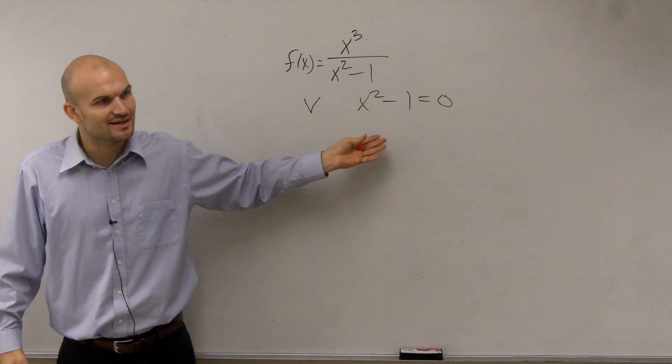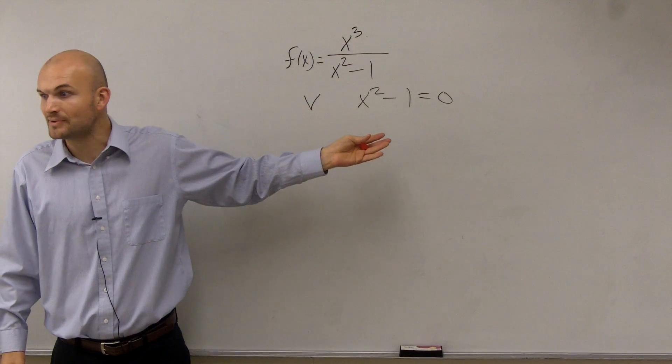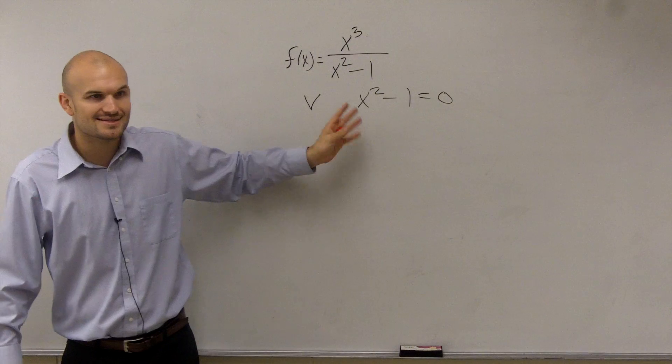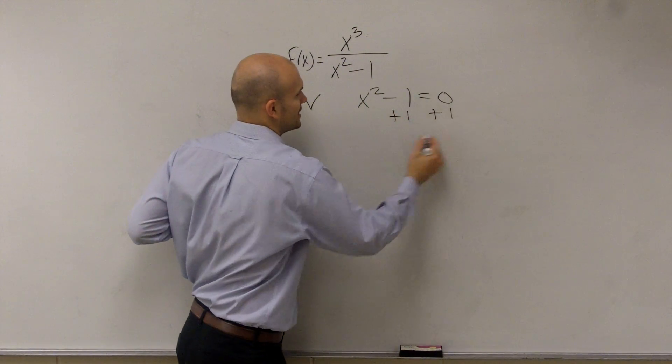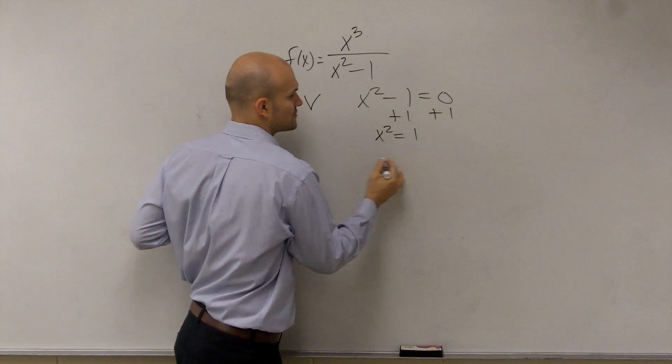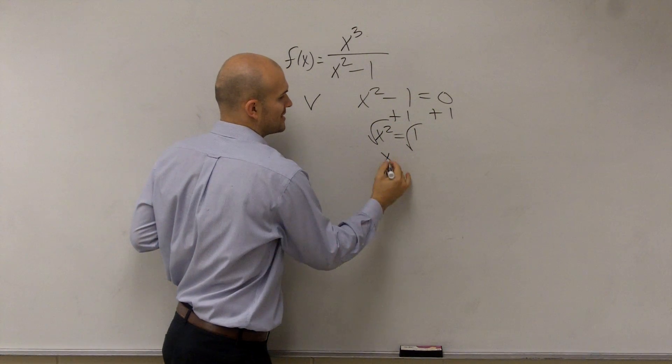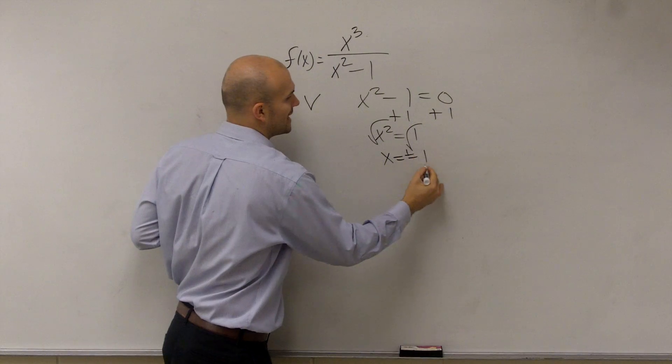So for this problem, fortunately, like that one that was factoring by grouping, that was a long one. Here, it's not that bad. I only have one x term, so I can isolate it. So I add one to the other side. I get x squared equals 1. Square root x equals plus or minus 1.